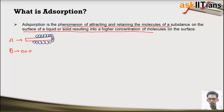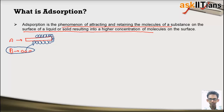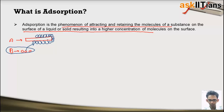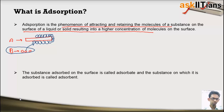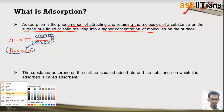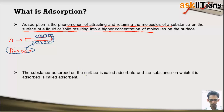The molecules of A are attracting the molecules of B onto its surface — attracting and retaining them there. So this process is adsorption, where molecules of B are attracted and retained on the surface of A. This leads to an increase in concentration on the surface; the molecules are present only on the surface and not in the bulk.